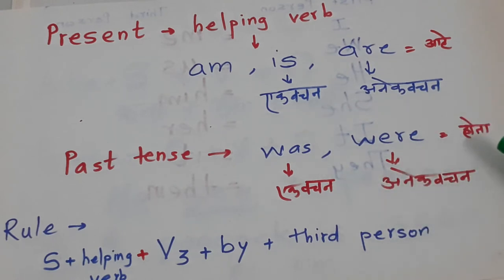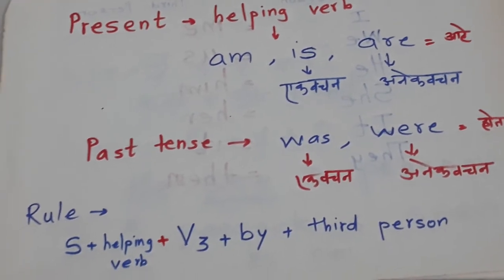Similarly, in past tense it becomes was and were. Was means he was, she was. Was is singular. And were is plural, meaning they were.